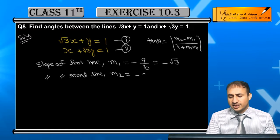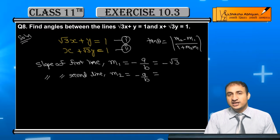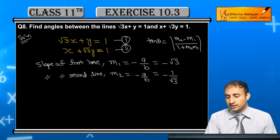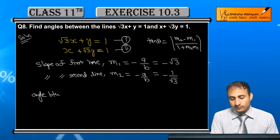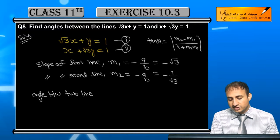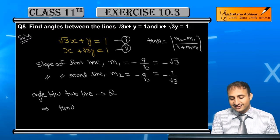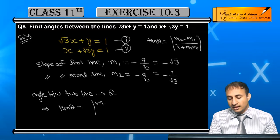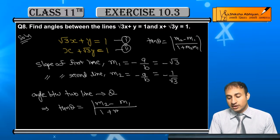The slope of the second line, m2, is again minus a by b, where a equals 1 and b equals root 3, giving m2 equal to minus 1 by root 3. Therefore, the angle between the two lines is given by tan theta equals m2 minus m1 upon 1 plus m1 times m2, taken as modulus.